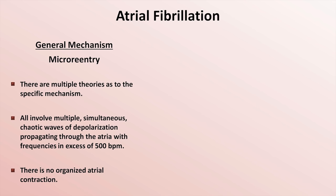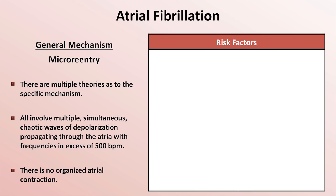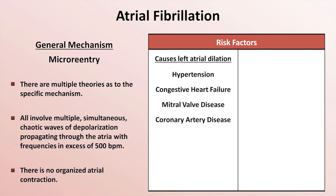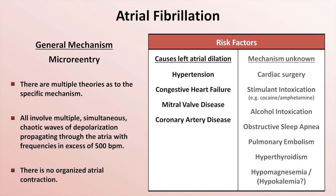It's more accurate to describe AFib as having risk factors rather than etiologies. Risk factors can be divided into those predisposing to left atrial stretch and dilation — such as hypertension, CHF, mitral valve disease, and coronary artery disease — and those whose exact mechanism is unknown, such as the immediate post-op period following cardiac surgery, stimulant or alcohol intoxication, obstructive sleep apnea, pulmonary embolism, hyperthyroidism, and hypomagnesemia. Although hypokalemia is widely believed to be a cause of AFib, this hasn't been established yet in the literature.